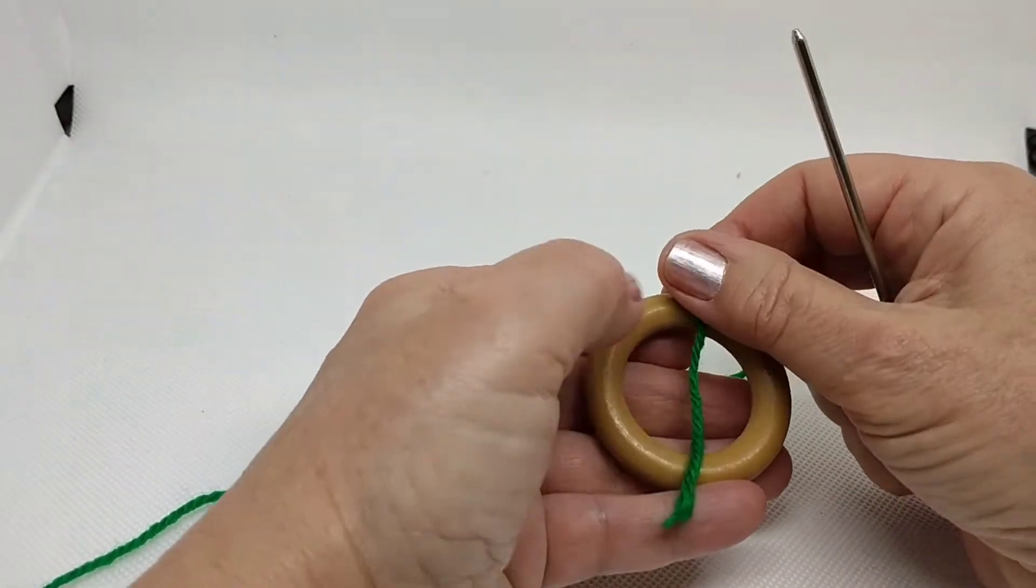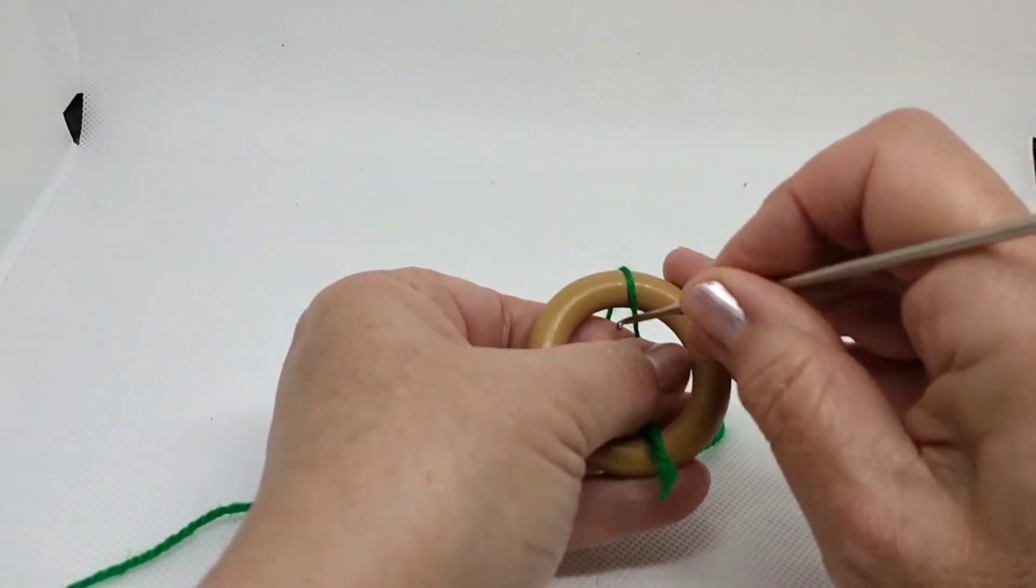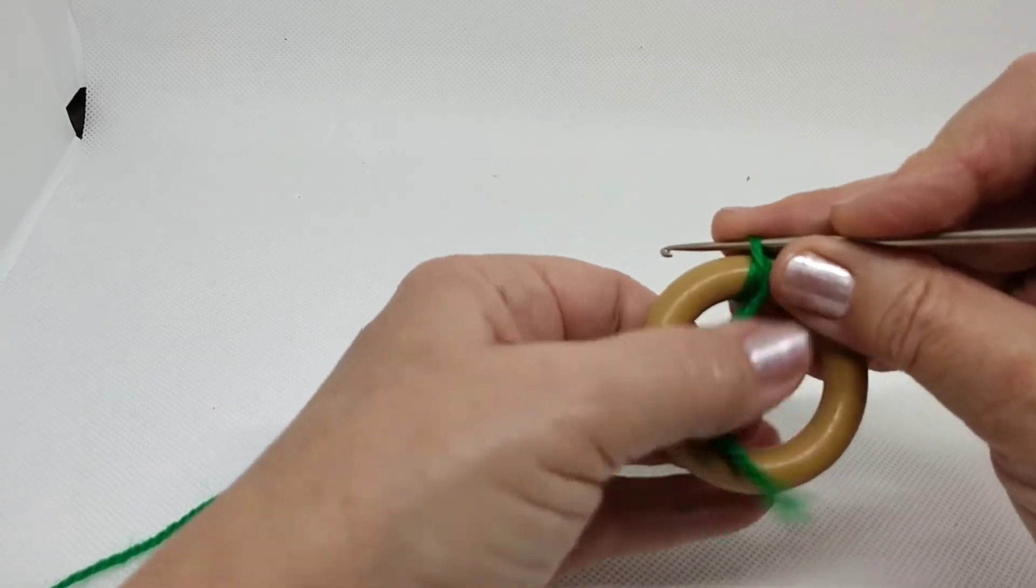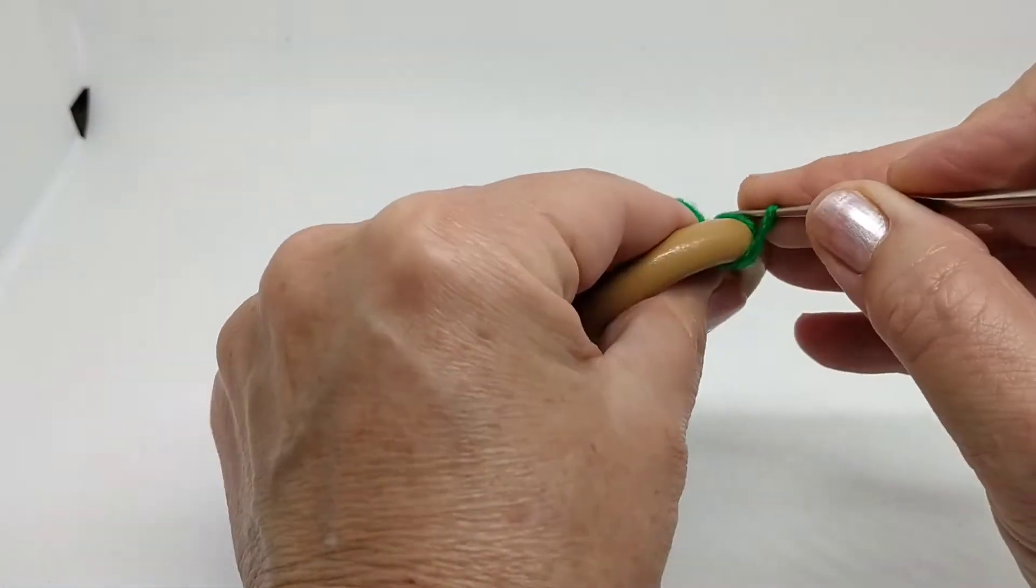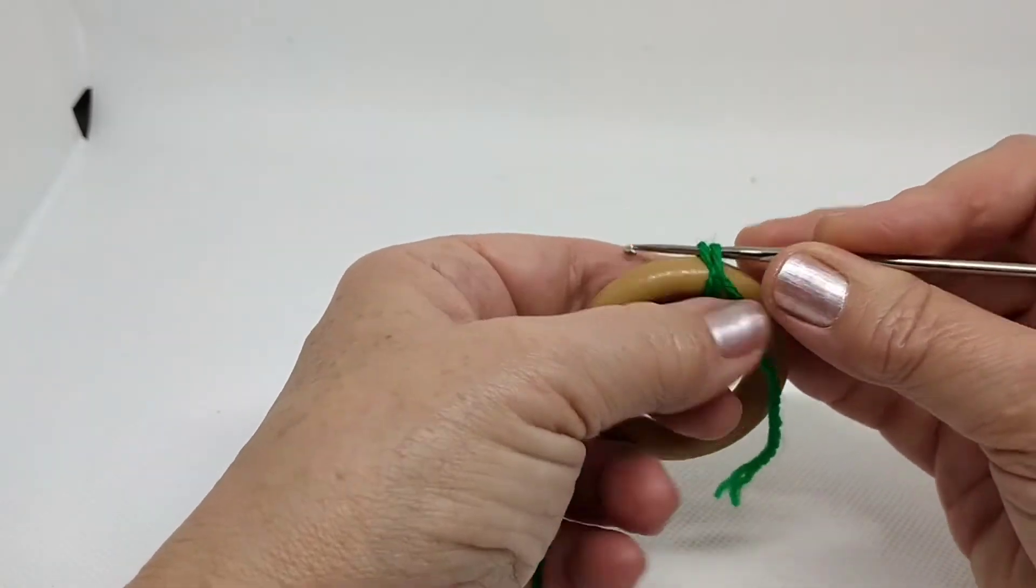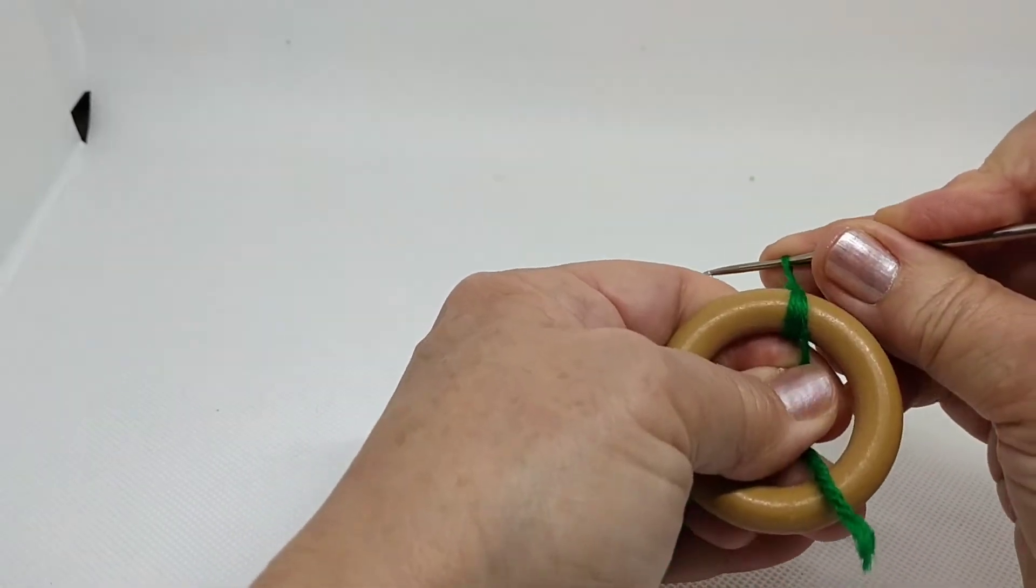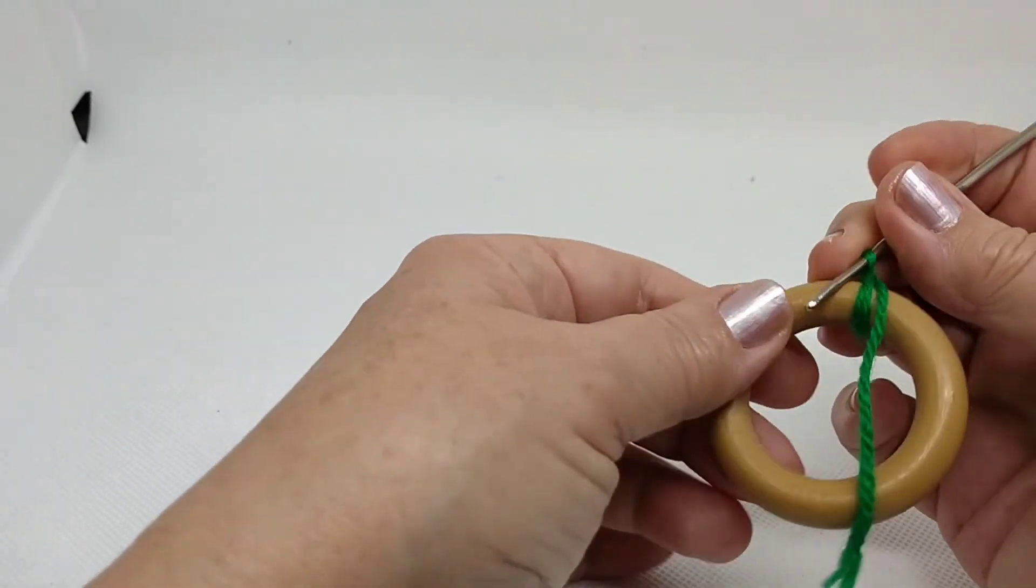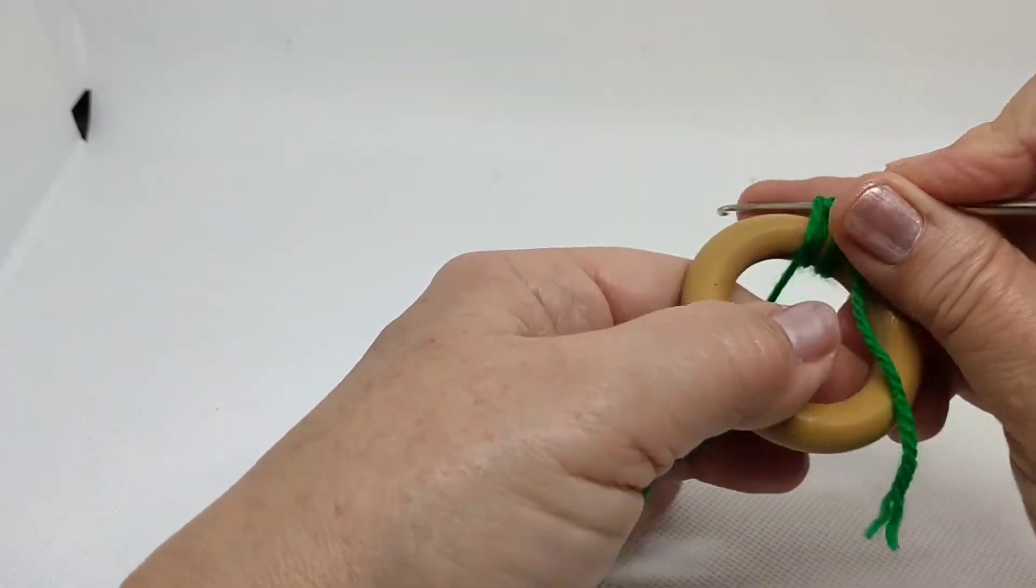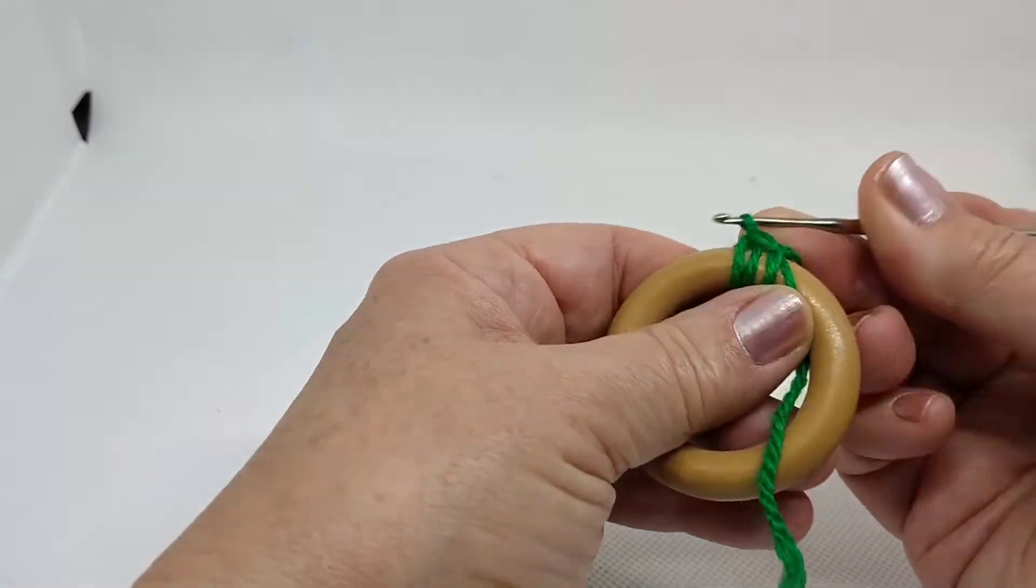Vamos a empezar cubriendo nuestra anilla. Ponemos la hebra aquí por encima, con nuestra aguja enganchamos y subimos. La pasamos por debajo de la primera hebra que hemos puesto, es una forma de fijarlo para que no se nos escape. Ahora metemos a través de la anilla.